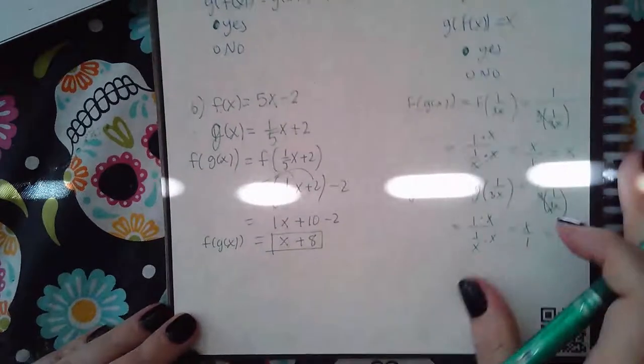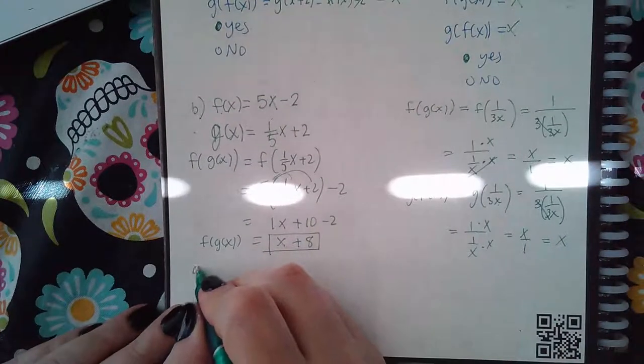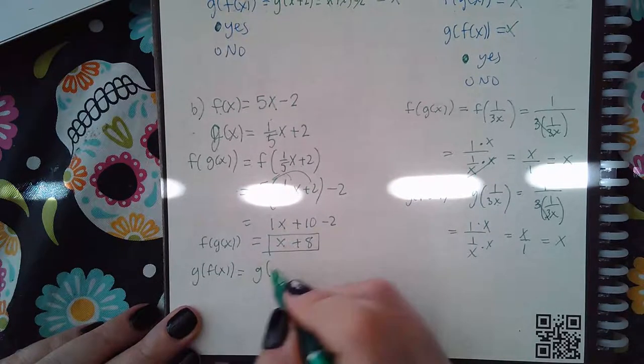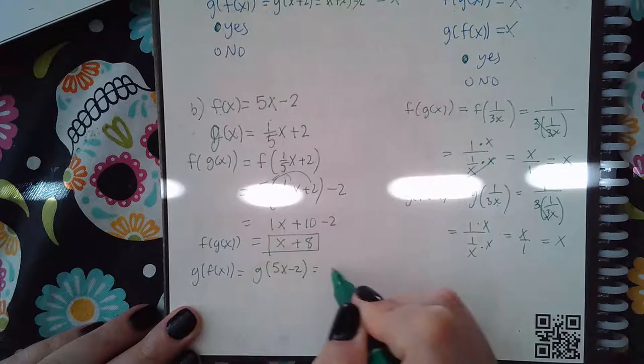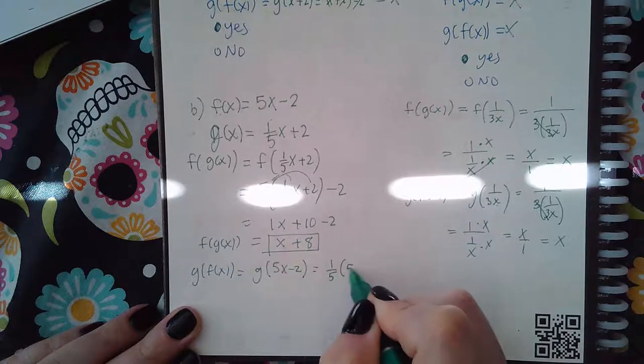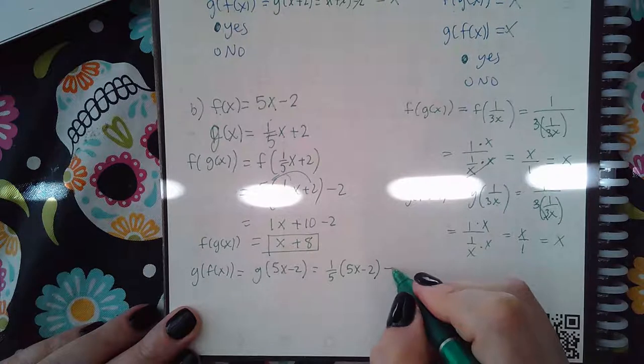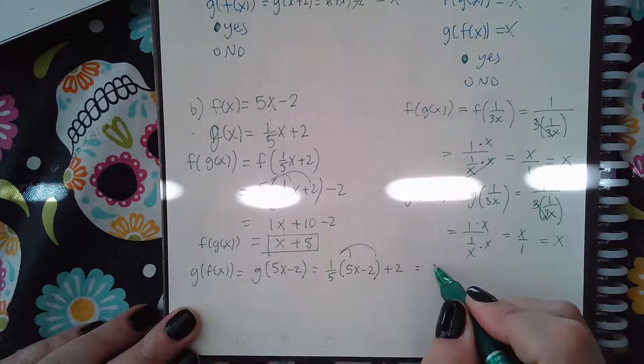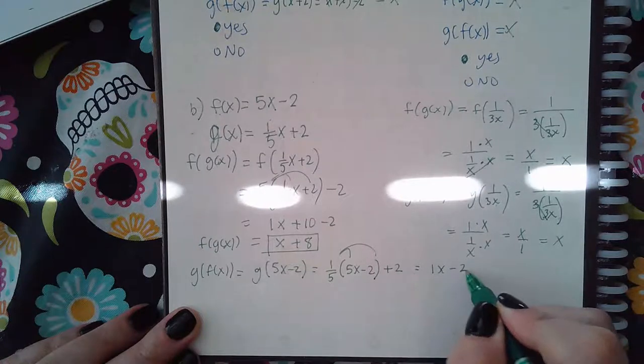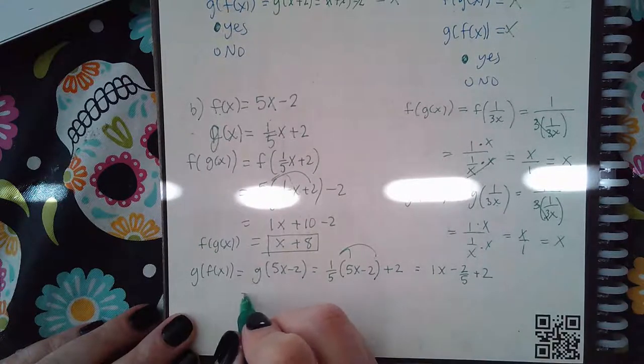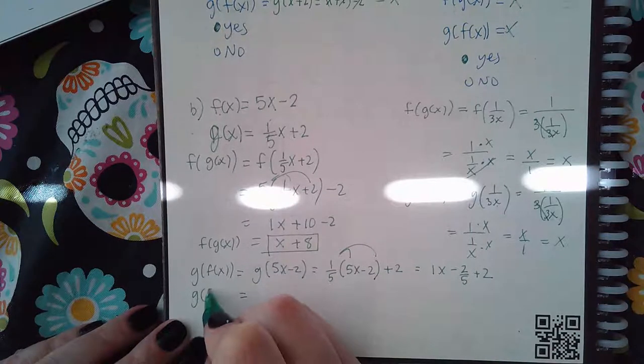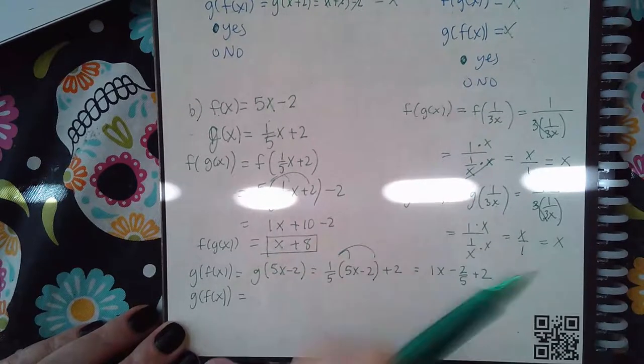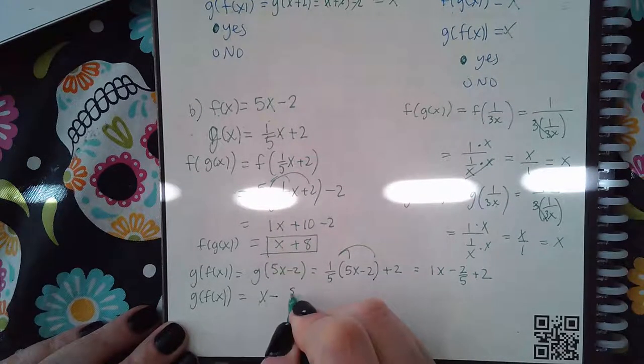Now when I figure out g(f(x)), I'm going to say g of 5x minus 2, which is one-fifth times 5x minus 2 plus 2. If I distribute my one-fifth, I get x minus two-fifths plus 2, which means g(f(x)) equals x minus eight-fifths.